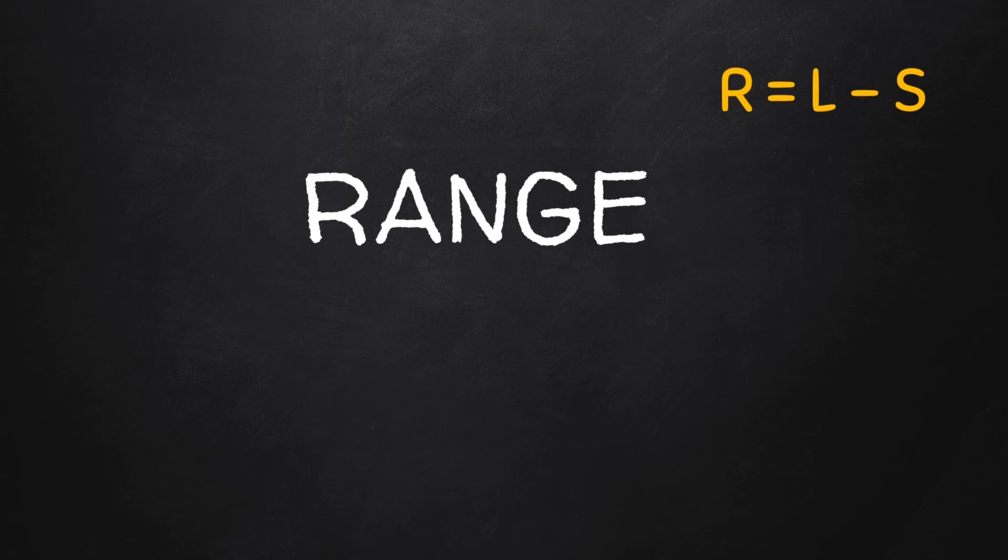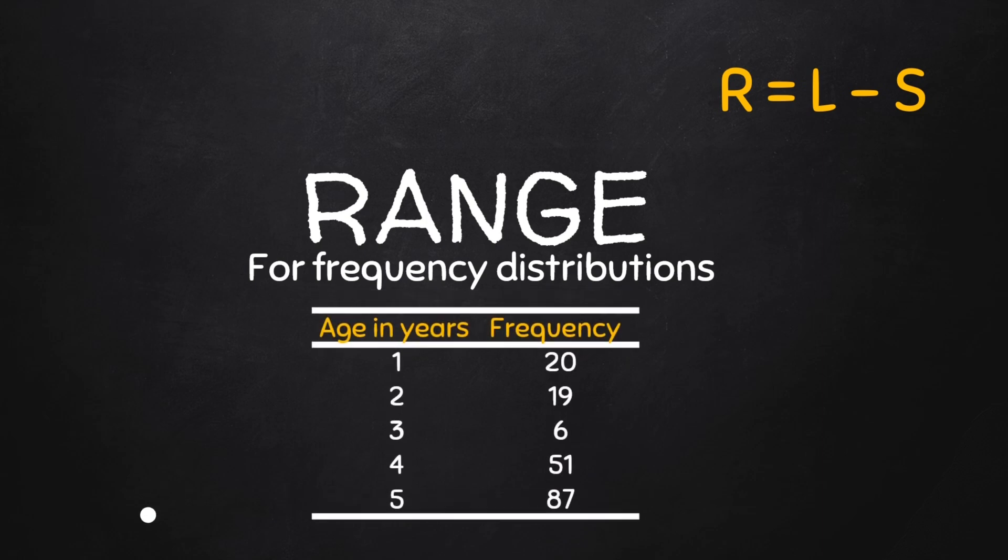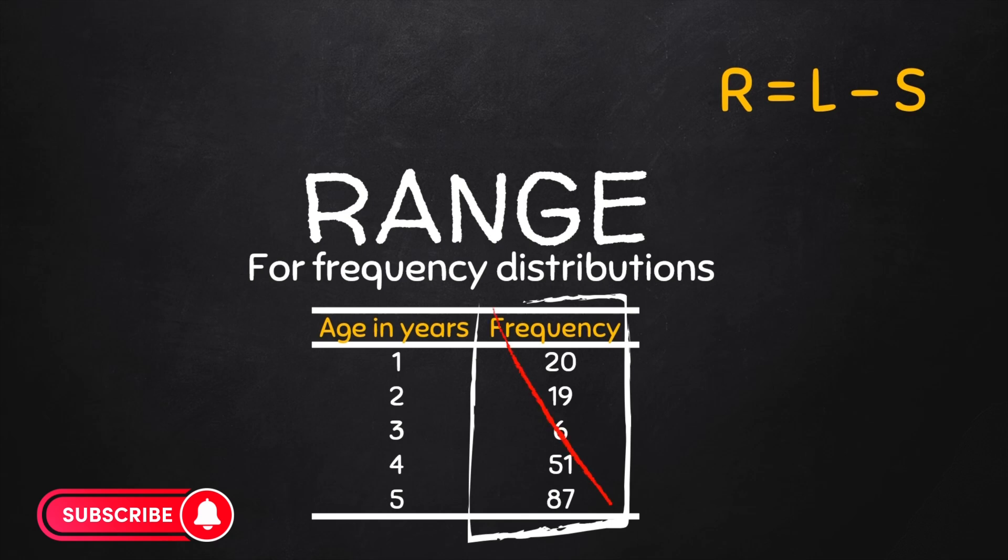Now what if we have a frequency distribution of the ages of patients that attended the clinic in a month? In the case of a frequency distribution, the frequencies of the various values of the variable or classes do not play any significance when determining the range, since the range depends on only the two extreme observations.